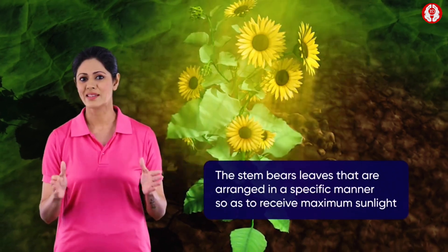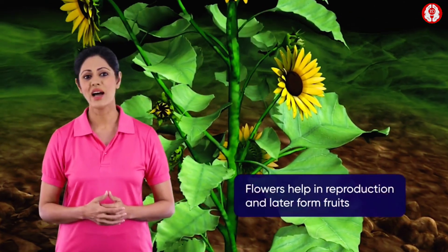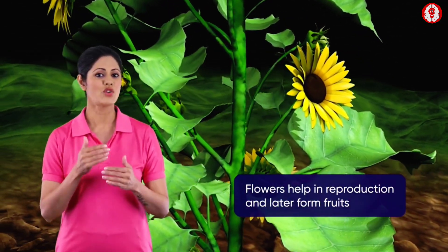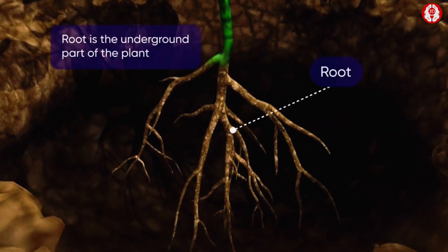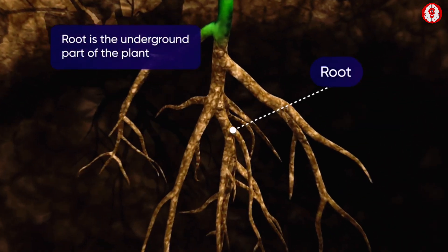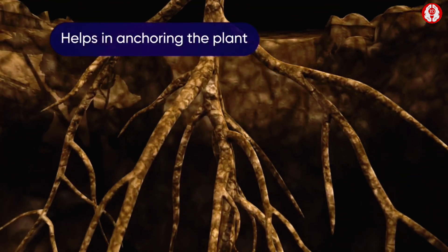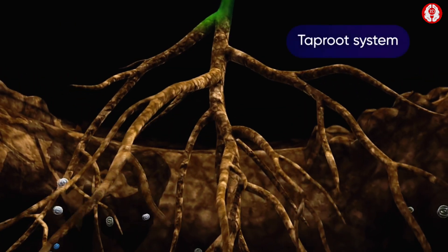The stem bears leaves that are arranged in a specific manner so as to receive maximum sunlight. The stem also bears buds and flowers. The flowers help in reproduction and later get transformed into fruits.